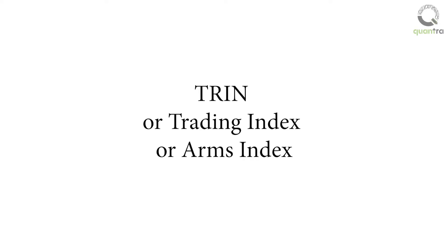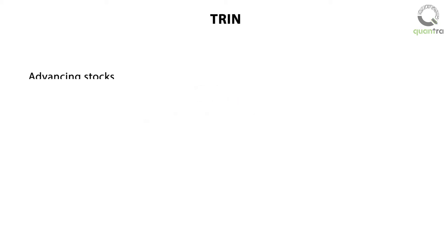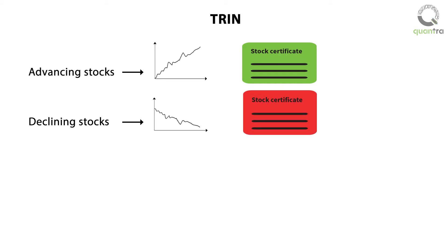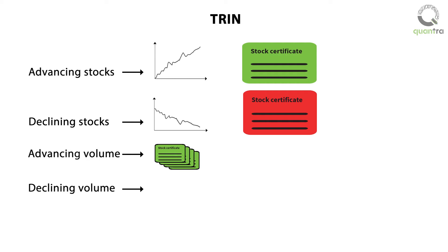Before we start, TRIN, or trading index, or arms index, let us understand a few necessary terms. Advancing stocks are the number of stocks in an index or exchange that have closed in green, that is, higher than their previous day's closing price. Declining stocks are the number of stocks in an index or exchange that have closed in red, that is, lower than their previous day's closing price. Advancing volume is the total volume traded in the advancing stocks, and declining volume is the total volume traded in the declining stocks.